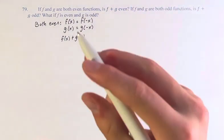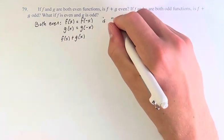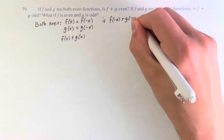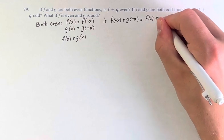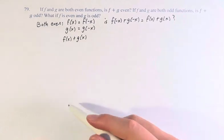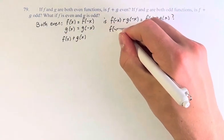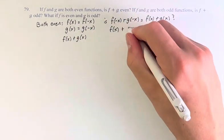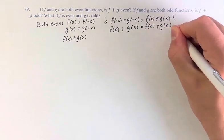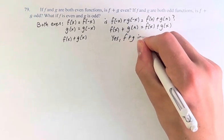Well, is f of negative x plus g of negative x equal to f of x plus g of x? We know that yes, this is true — we can just do basic substitution. f of negative x is equal to f of x, so that can be plugged in, plus g of negative x is equal to g of x, so we can plug that in. And now both sides of the equation are equal, so yes, f plus g is even.